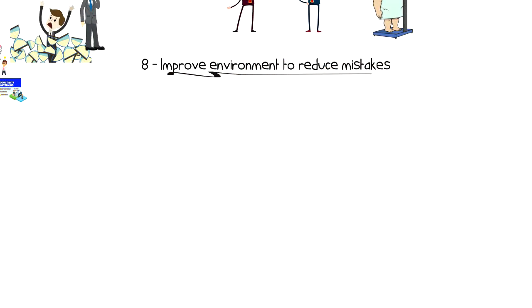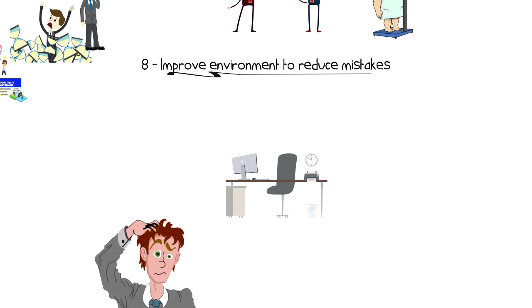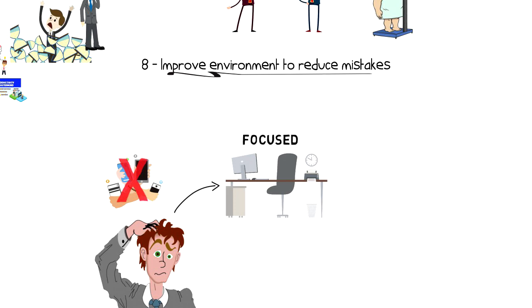Number eight, improve environment to reduce mistakes. Your environment has a huge impact on your performance and that directly will impact how many mistakes you're going to make. So it's important that you create an environment for yourself that helps you stay focused on the things that you want to accomplish. This means taking care of all the potential distractions that have the ability to get you distracted.